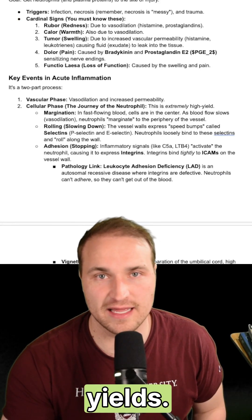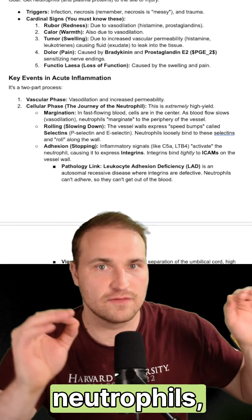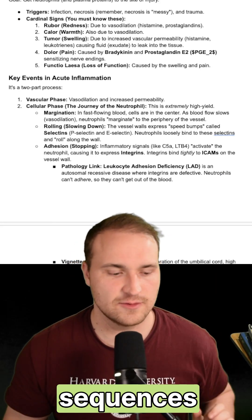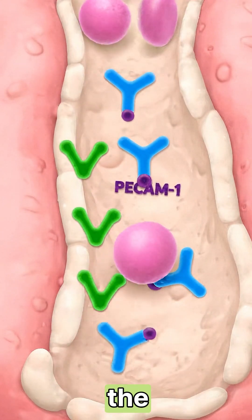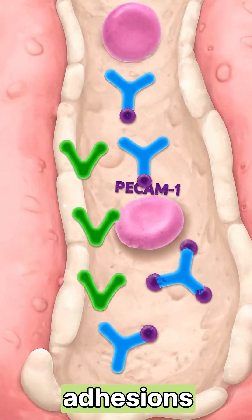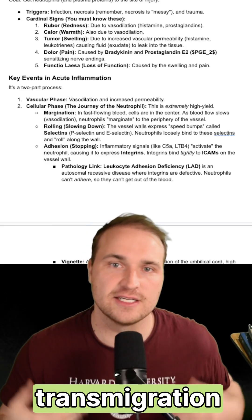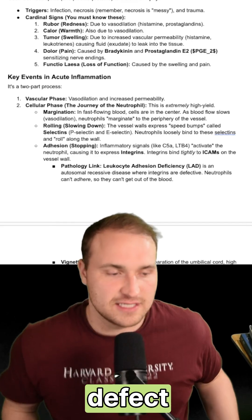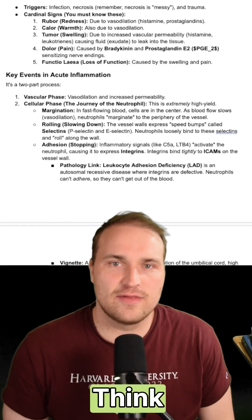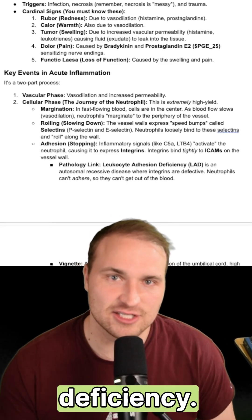Acute inflammation is super high yield — think neutrophils. The sequence is margination, rolling with the selectins, adhesion with the integrins, and then transmigration through PECAM-1. If there's a defect in that pathway, think leukocyte adhesion deficiency.